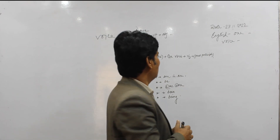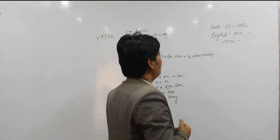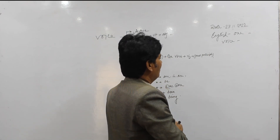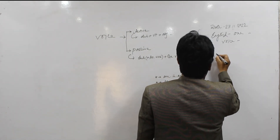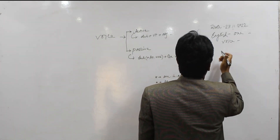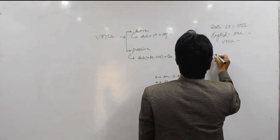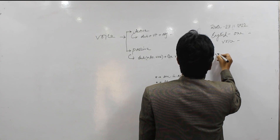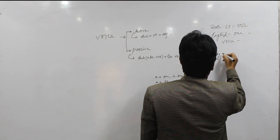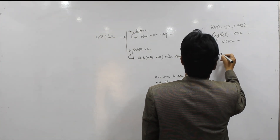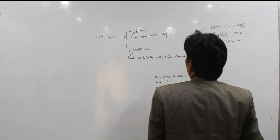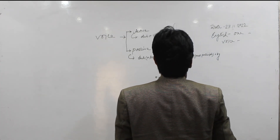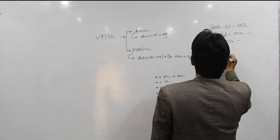Then, after the past participle, there may be a preposition — mostly 'by' is used here. After 'by', the subject of the active voice is used as an object in the passive voice.